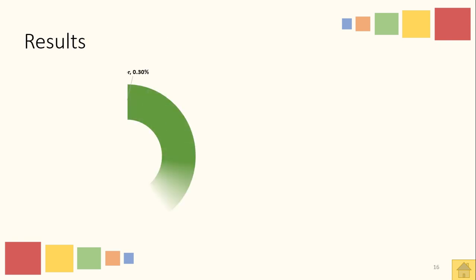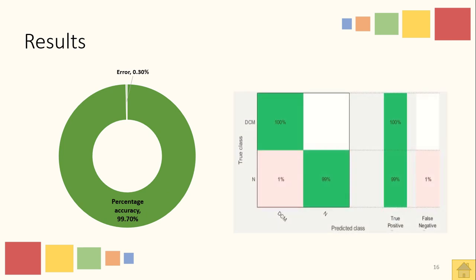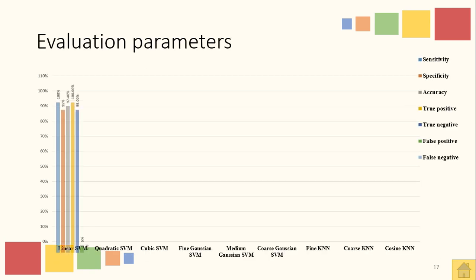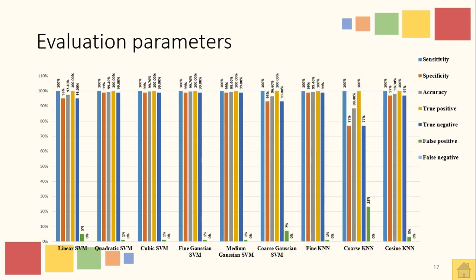The statistical parameters also show that the percentage accuracy obtained was 99.7%. The confusion matrix of the results shows the two classes, indicating a 100% true positive rate and 99% true positive rate respectively. The evaluation parameters of various support vector machine kernels and a comparison of SVM with KNN show different results, with sensitivity, specificity, and accuracies shown in this slide.